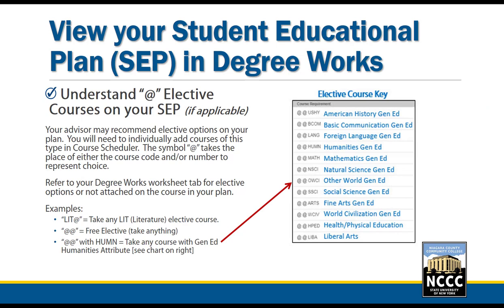Your advisor may recommend elective options on your plan, meaning you have choices as to what courses you can take within an elective area. For example, if your advisor lists a mathematics gen ed course, you will see the two at symbols with the word math listed. This means you have options as to which math course you can take, as long as they are under the mathematics general education required courses and you are mindful of any prerequisites that may be required.